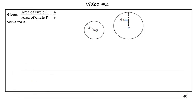Starting off, we are given that the ratio of the areas of circle O and circle P is 4 over 9. Our goal is to solve for A. So what we learned in the previous investigation is...